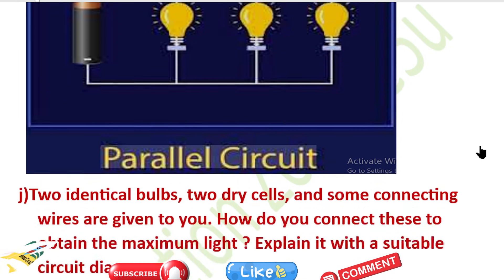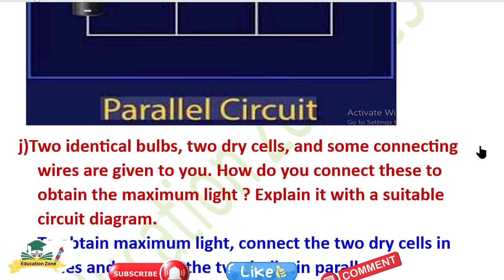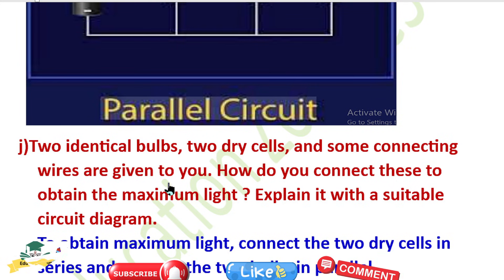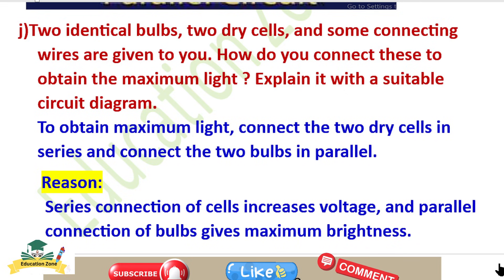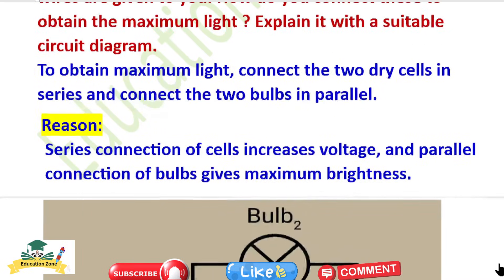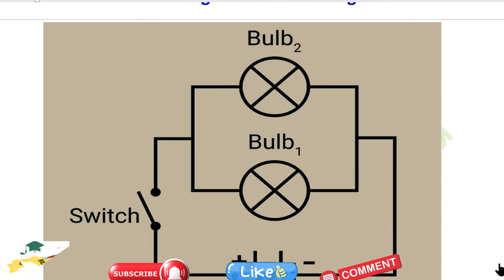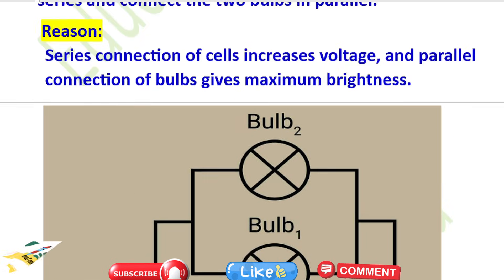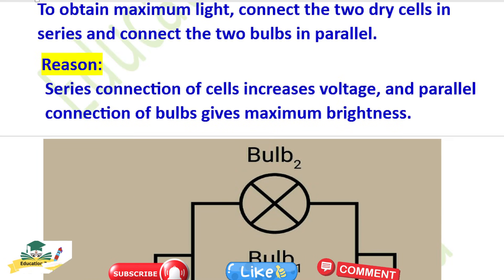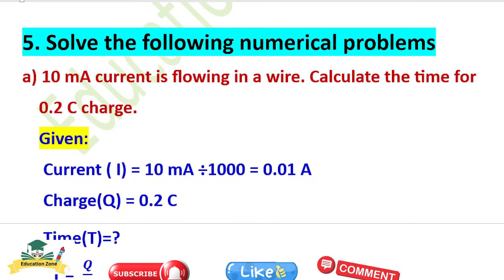Question: Two identical bulbs, two dry cells, and some connecting wires are given to you. How do you connect these to obtain maximum light? Connect the two dry cells in series and connect the two bulbs in parallel. Reason: Series combination of the cells increases the voltage; parallel connection of the bulbs gives maximum brightness.